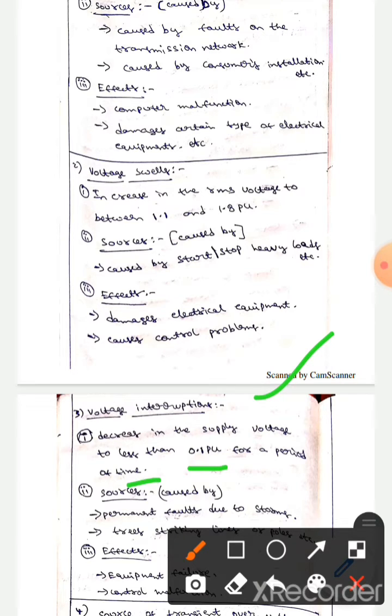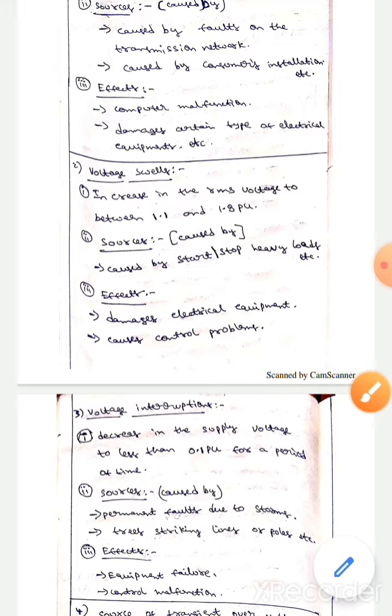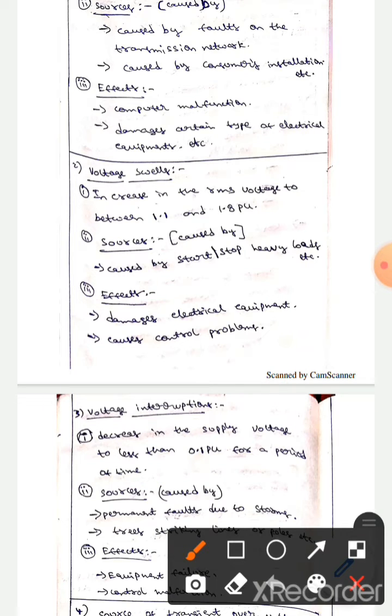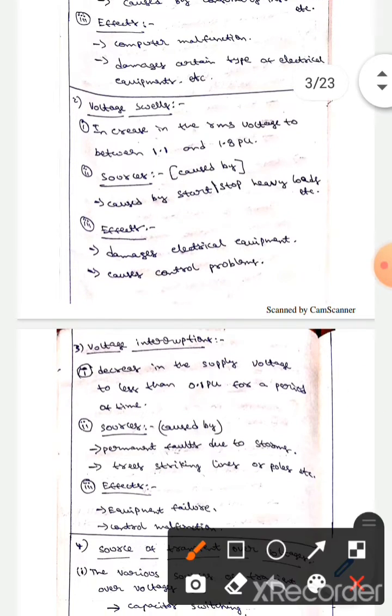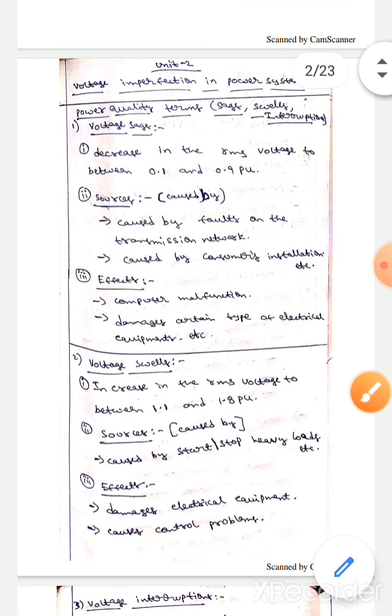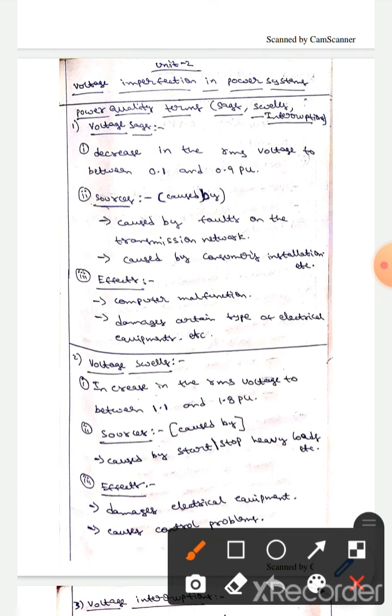For a period of time, the sources - it is caused by permanent faults due to storms and is also caused by lightning striking lines or poles. The effects are equipment failure and computer control malfunction. This is all about the sags, swells, and interruptions. I hope you understand guys, thank you.